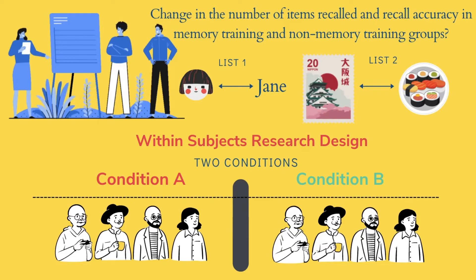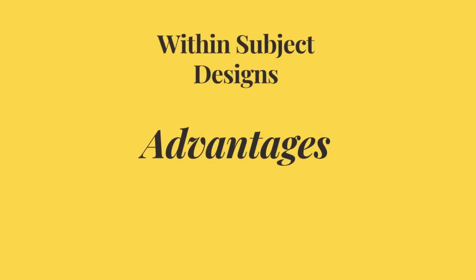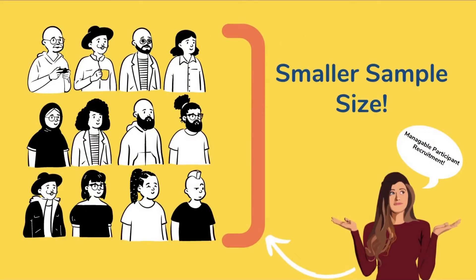Now that we understand the within-subjects design, let's look at its advantages. One key advantage is that this design allows us to have a small sample size, because we don't need to recruit equal numbers of different participants across the different groups — the same participants can be recruited across all conditions. Recruiting participants in general can be very difficult, and specifically if your study requires participants from a specific clinical or neuropsychiatric group, it can be very difficult to do a between-subjects design. In such scenarios, using a within-subjects design can be very helpful.